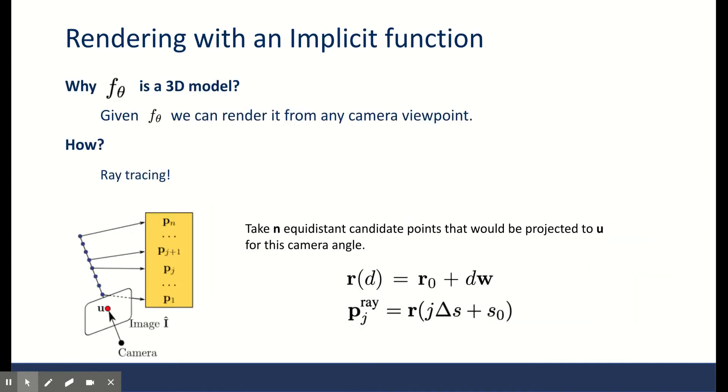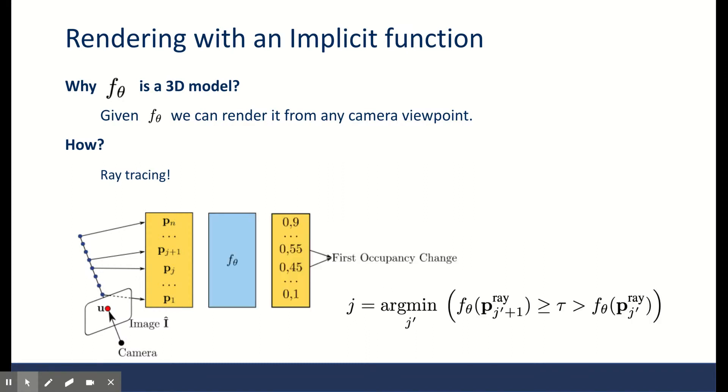As we said before, the surface happens at the root of function F_theta equals tau. A popular method for finding this root is to first sample endpoints along a camera ray at pixel position u. Here, others use equidistant initial candidates. Let's call these points P1 to Pn. Then we calculate the occupancy probability of these points in parallel by passing them through our implicit function F.